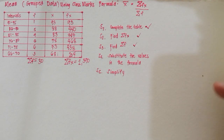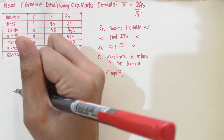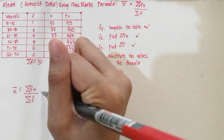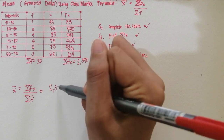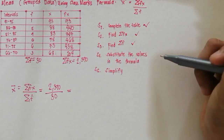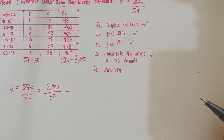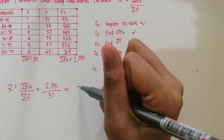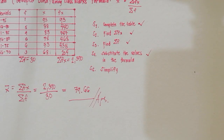Step 4 is to substitute the values into the formula: mean is equal to summation of FX divided by summation of F, which is 2,390 divided by 30. Step 5 is to simplify — 2,390 divided by 30 gives 79.66. So the mean of this group of data is 79.66.